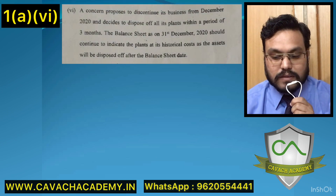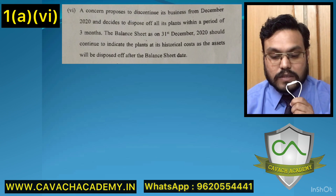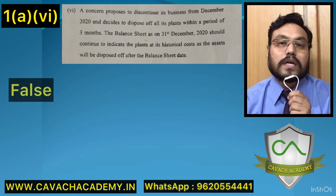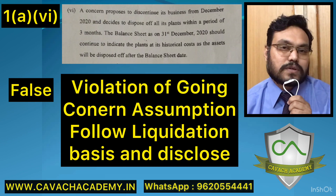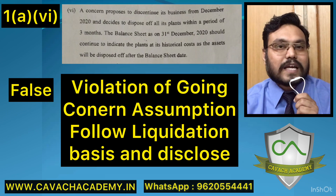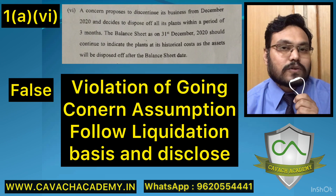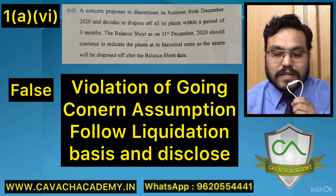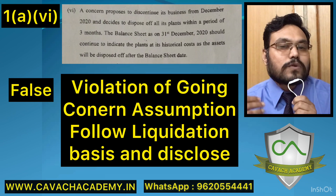Sixth question in 1a: A concern proposes to discontinue its business from December and dispose of all its plants within three months. The balance sheet dated 31st December should continue to show the plants at historical cost as the assets will be disposed of after the balance sheet date. The answer is FALSE. This is a going concern assumption violation. Normally companies follow the going concern assumption — for the foreseeable future, the company is not shutting down — but this is not a normal scenario.